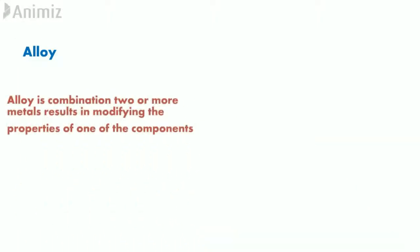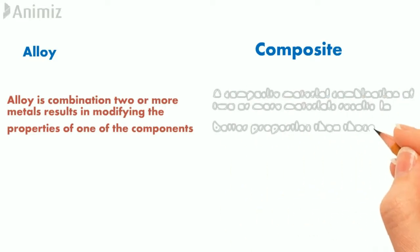Alloy is a combination of two or more metals resulting in modifying the properties of one of the components. If you want to take advantage of both materials, then we have to go for the composite.